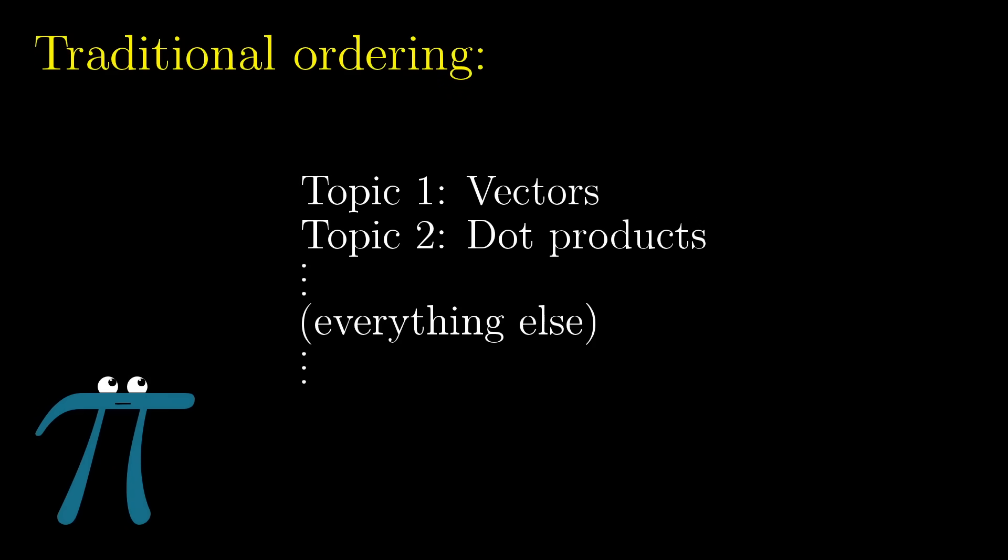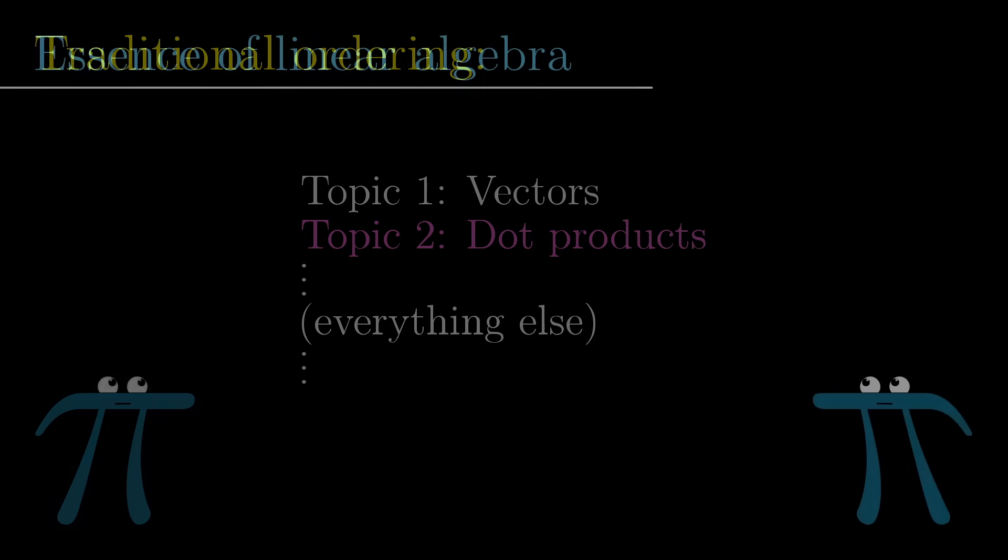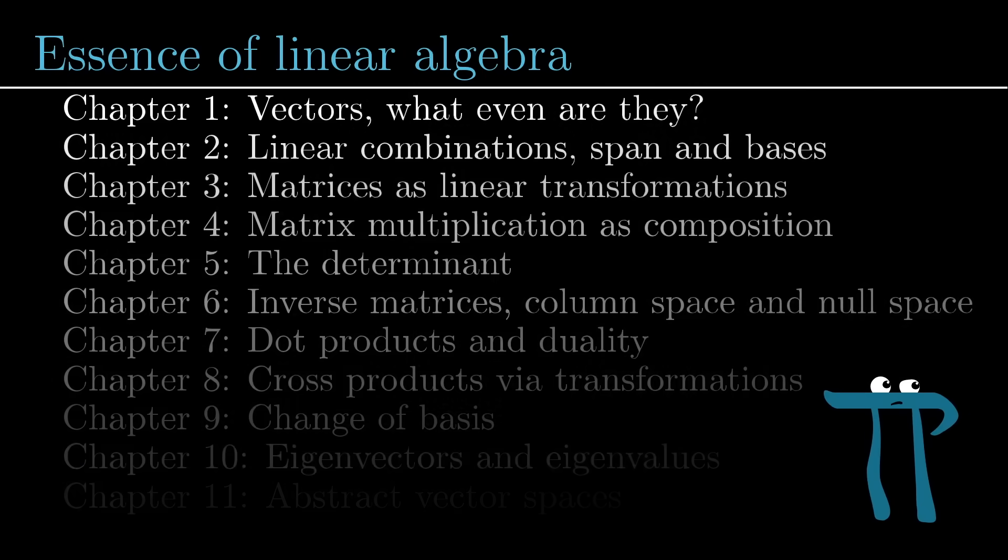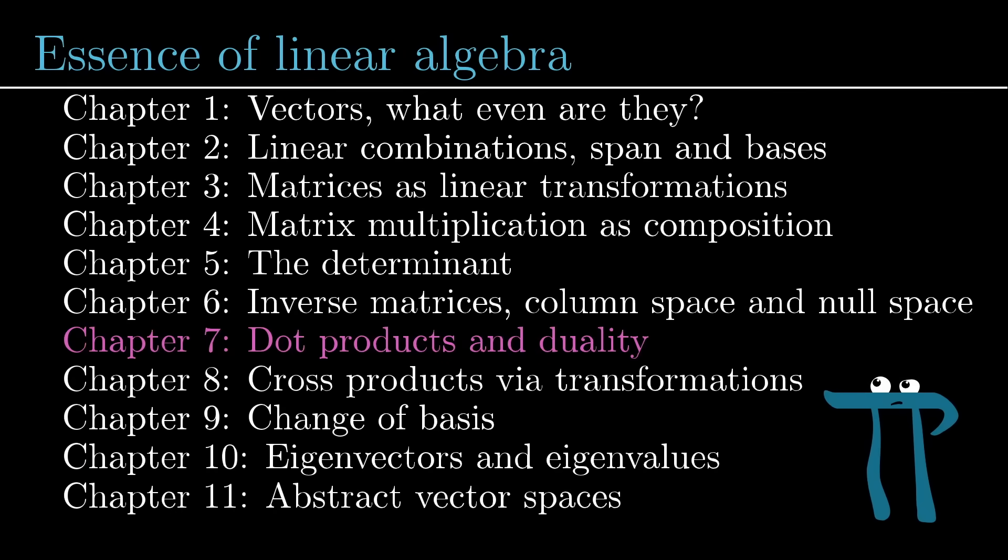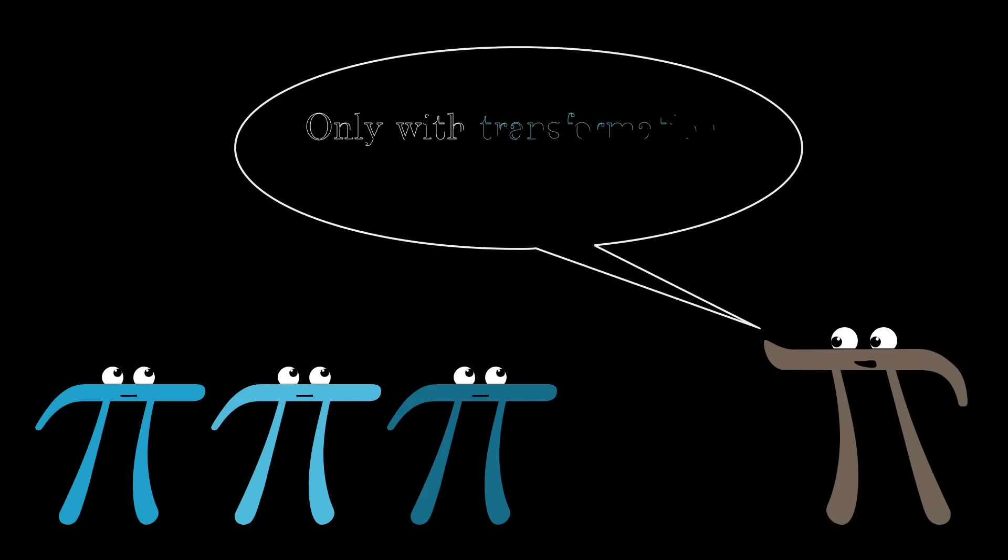Traditionally, dot products are something that's introduced really early on in a linear algebra course, typically right at the start, so it might seem strange that I've pushed them back this far in the series. I did this because there's a standard way to introduce the topic, which requires nothing more than a basic understanding of vectors, but a fuller understanding of the role that dot products play in math can only really be found under the light of linear transformations.